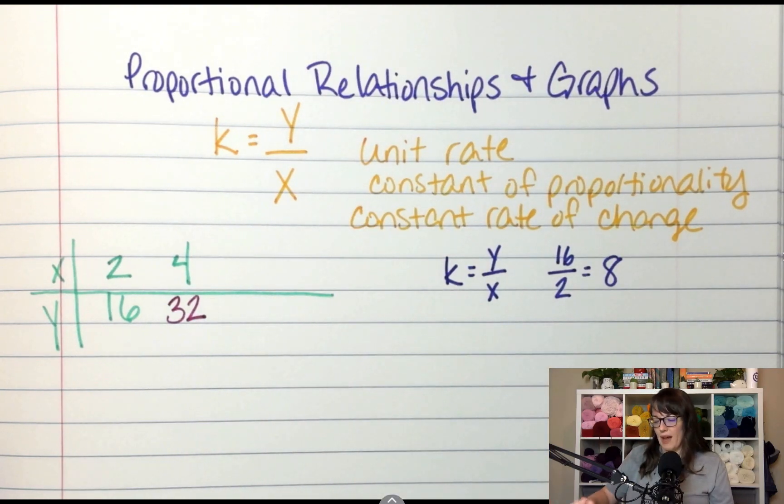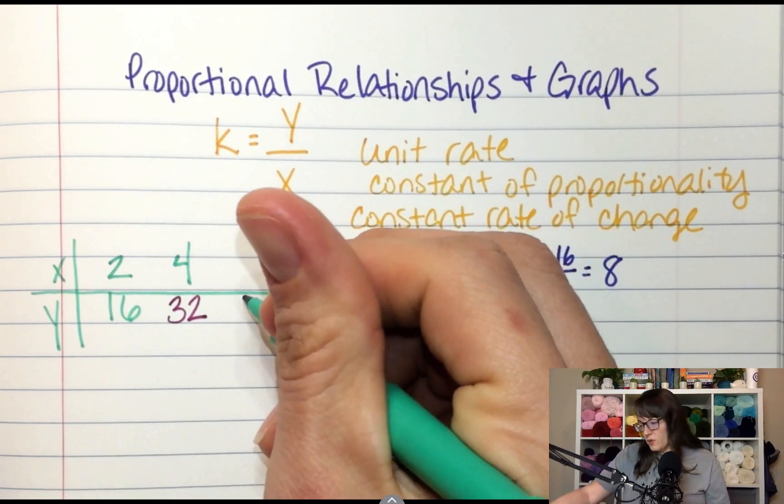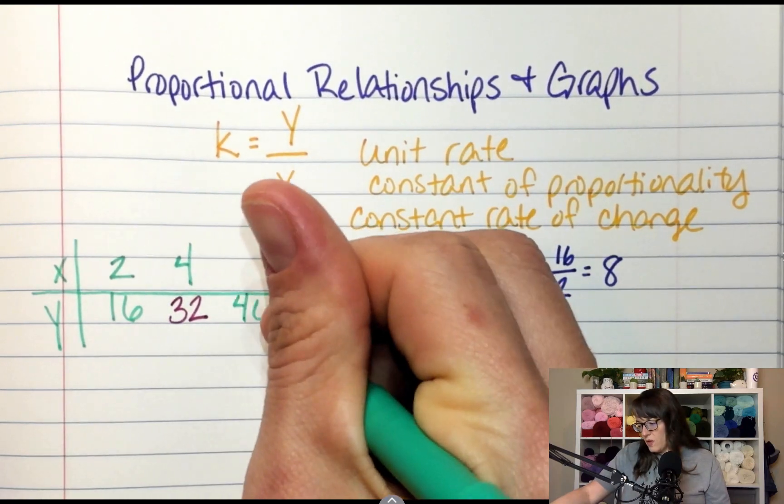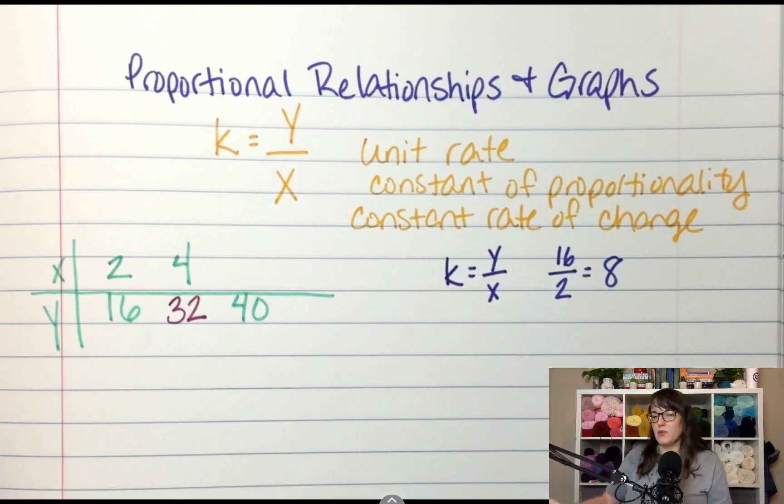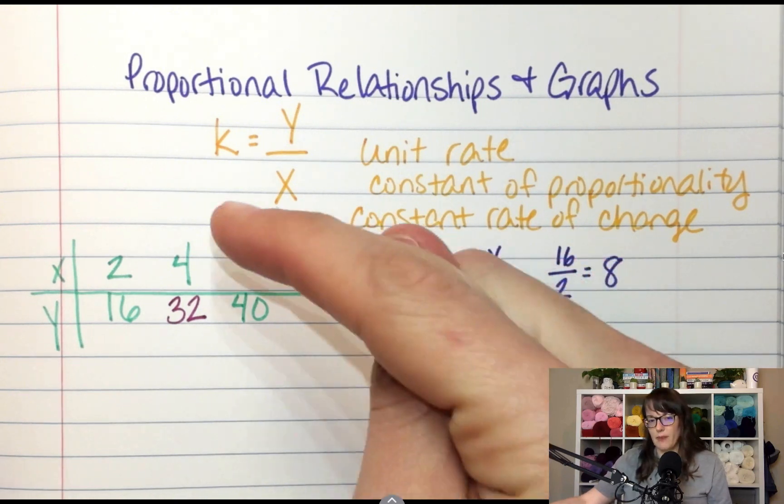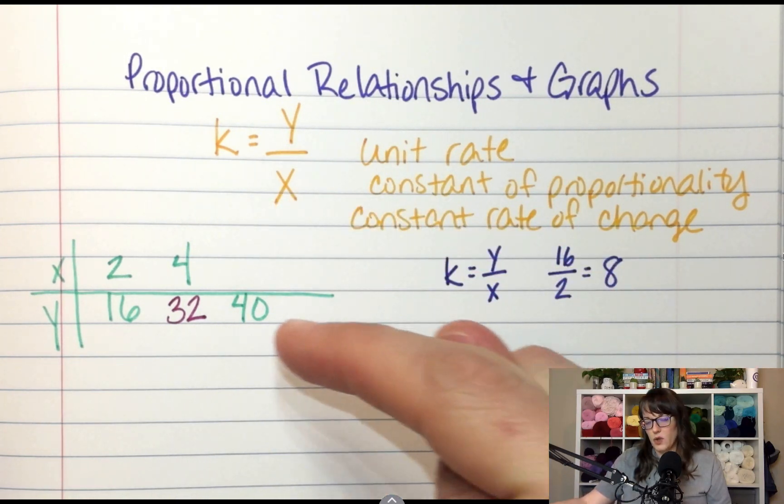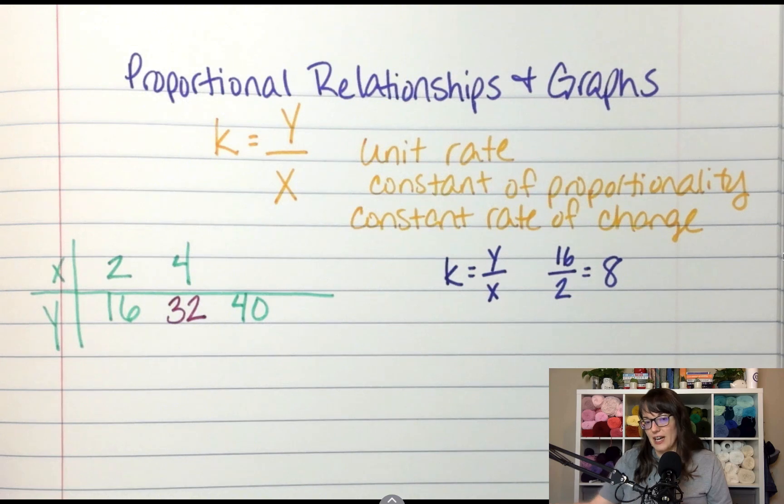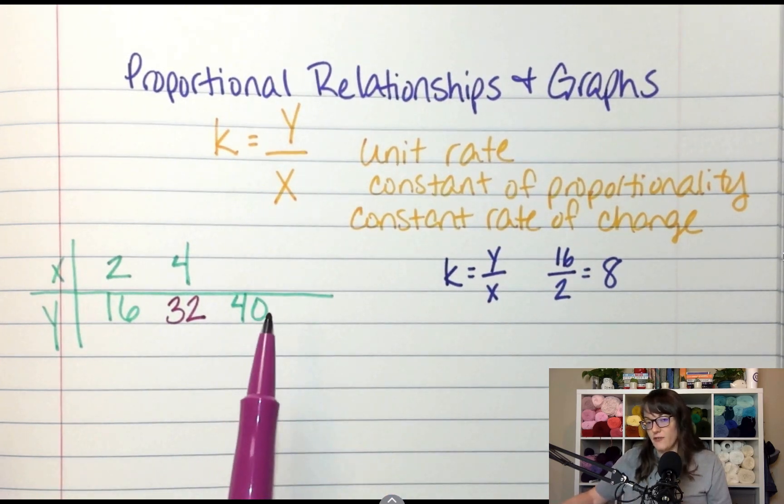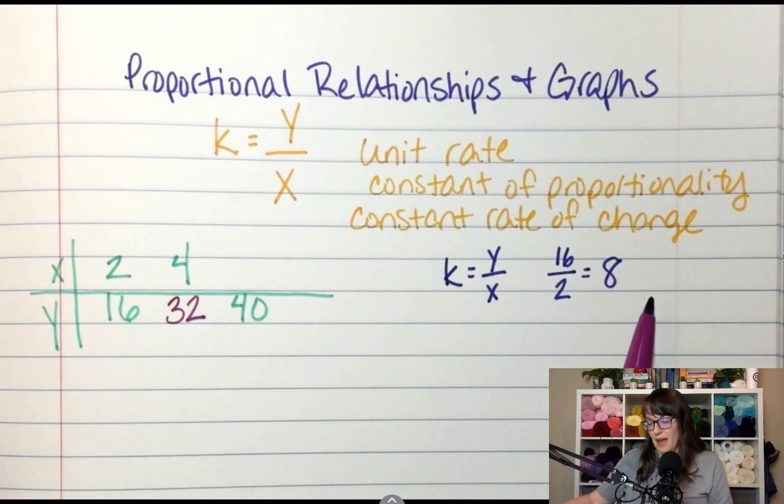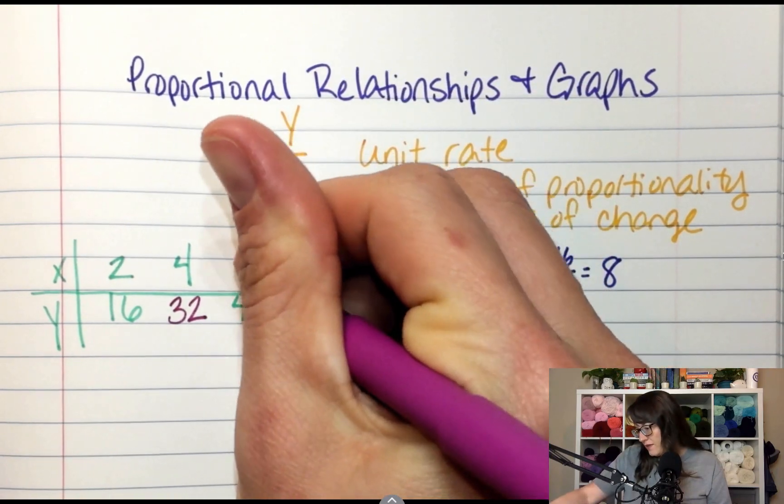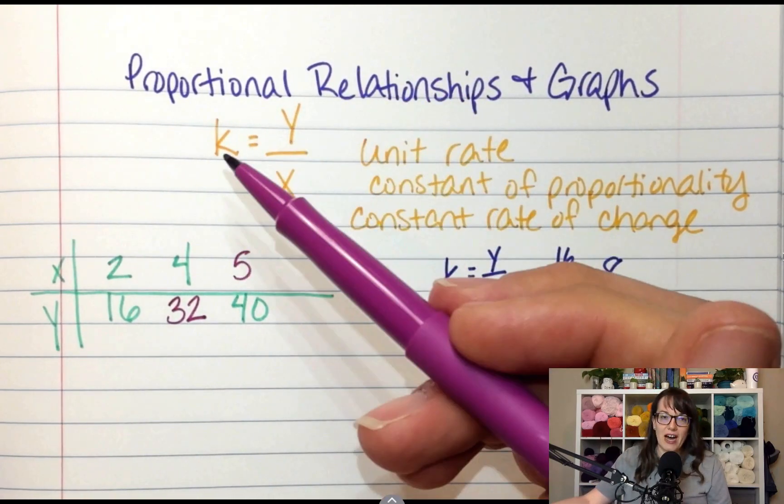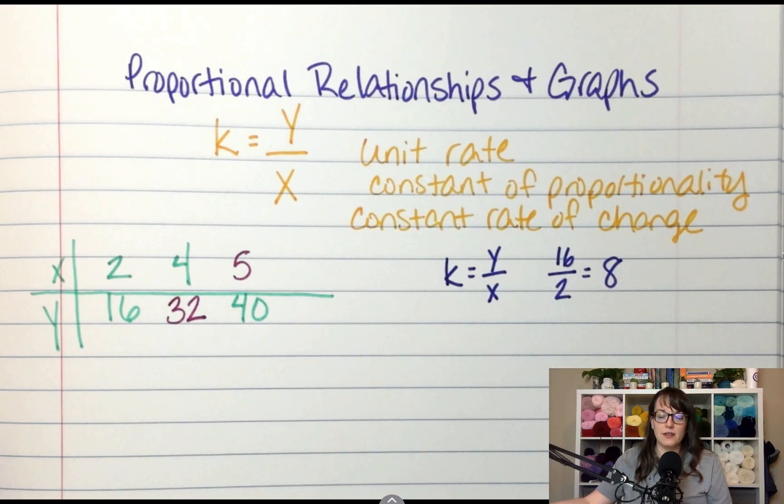What if we had to go backwards? What if I told you that the y was 40? How much would x be? Remember to get from x to y I multiplied, so to go backwards we're going to divide. So this is going to be 5 because 40 divided by 8 is 5, or you could think about it that 5 times 8 is 40.